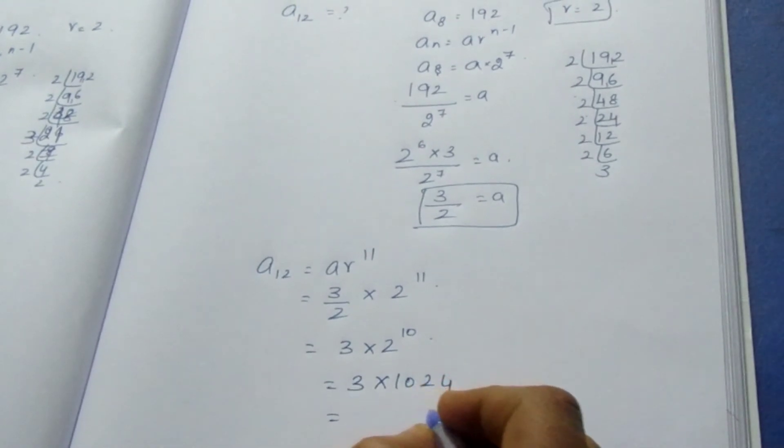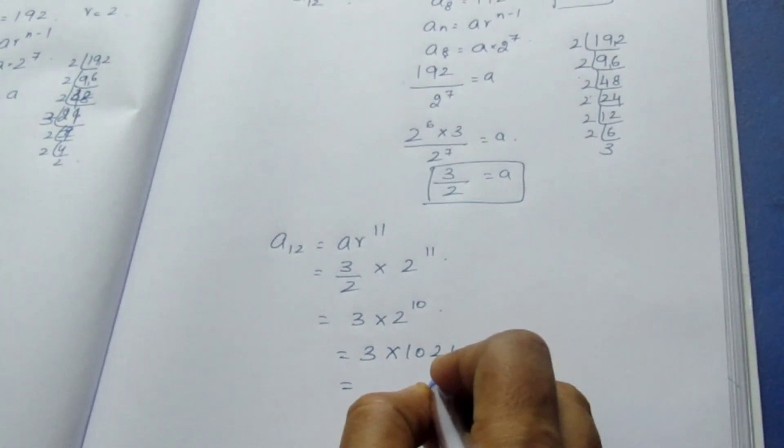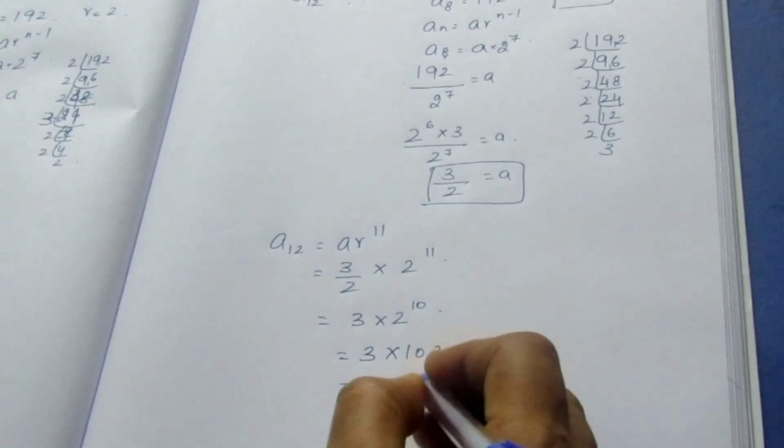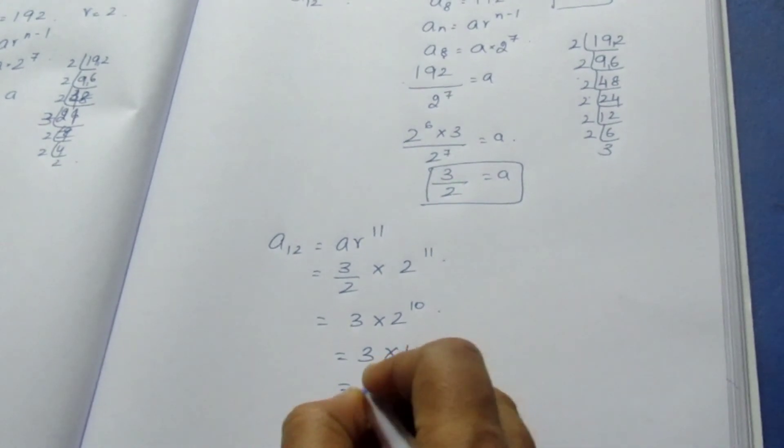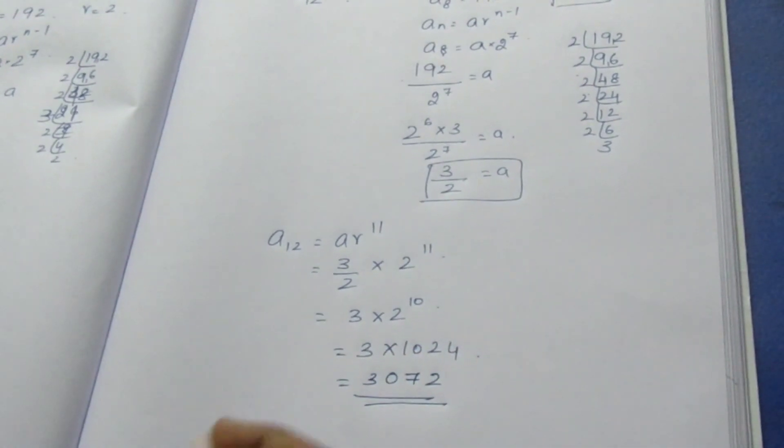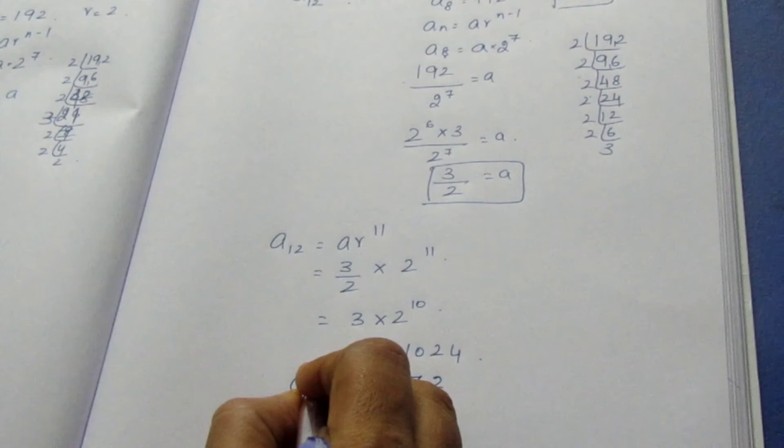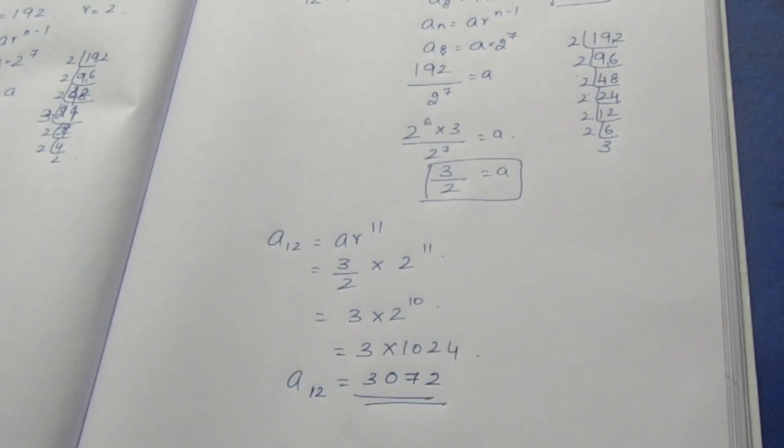Now we can multiply this. It is 3072. A12 is 3072. That's all with this sum. Thank you.